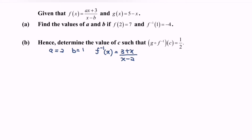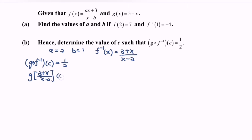Hence, determine the value of c such that g composed with f inverse of c = 1/2. We now have a composite function. Focus on the left-hand side: f inverse is (3 + x) / (x - 2), so g(f inverse of c) means substitute c to get g((3 + c) / (c - 2)) = 1/2.